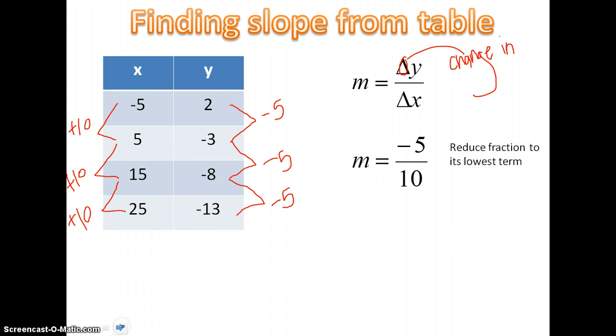And then remember, reduce fractions to the lowest term. So if we do 5 divided by 10, it would become m equals negative 1 half. Also remember, if one part of the fraction is negative, the whole fraction is negative.